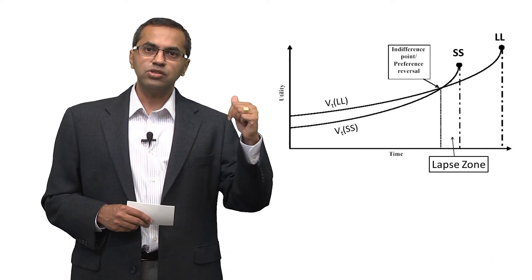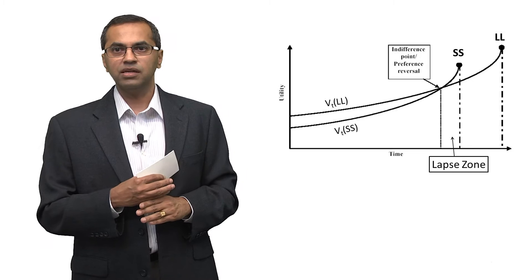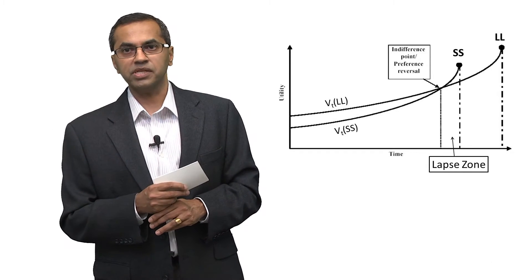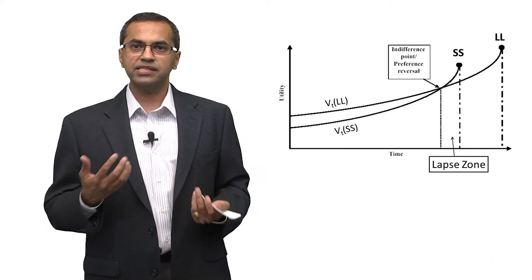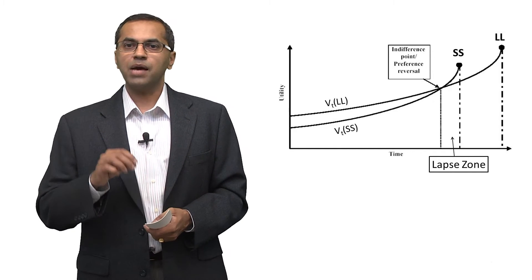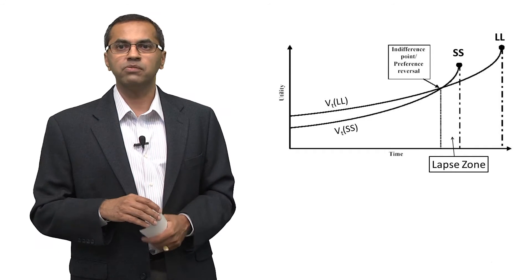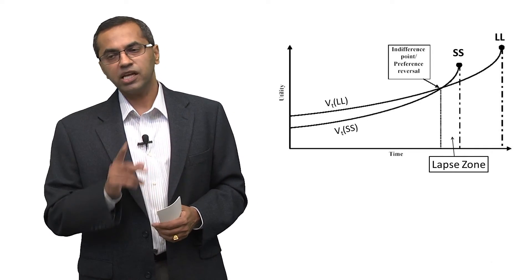Now, the notion that these two lines coming out of SS and LL cross each other is a phenomena that is called by economists or behavioral economists as hyperbolic discounting. Discounting is the idea that people value things differently in the present as opposed to the future. Hyperbolic refers to the specific equation, the specific functional form which lets those two lines cross each other.